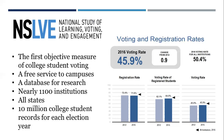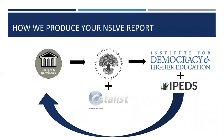Each campus gets a customized report with their institution's voting and registration rates and that information broken down. The way that we're able to produce the NSOLV reports is through a partnership that we've established with the National Student Clearinghouse.